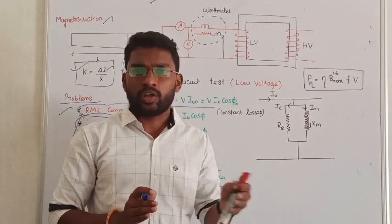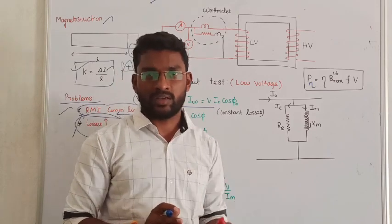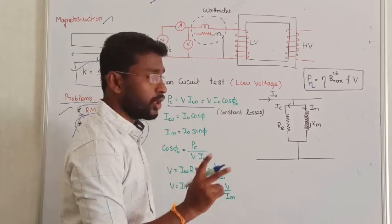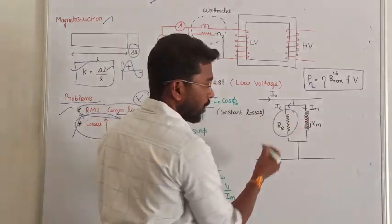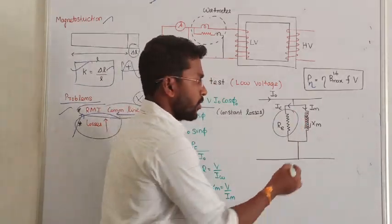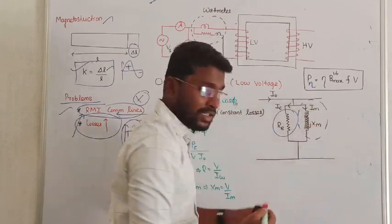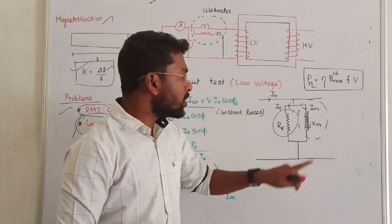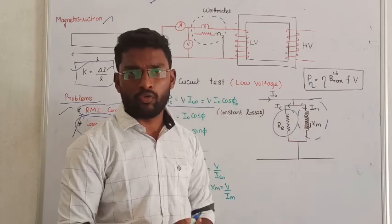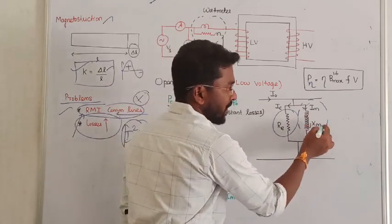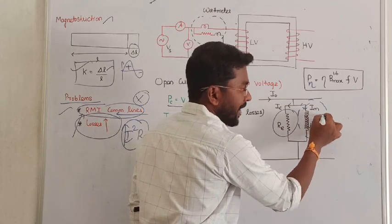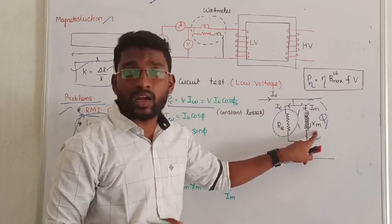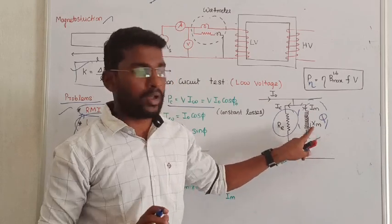In the transformer, core loss is a constant loss. The transformer on open circuit consumes some current, and that current is responsible for two things: one is the winding-level core loss current, and another one is the magnetizing current. The magnetizing current is responsible for building up the flux. These two currents flow in the transformer. The magnetizing current is a reactive component — it will never consume real power in the transformer.